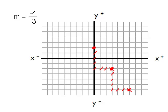And if we want, we can even treat that slope m as positive 4 over negative 3. That would allow us to go up 4 from our y-intercept and left 3. So let's do that.